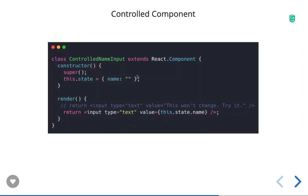Controlled components: the state of a component is controlled by React state. An input text field's value is controlled by state - you type something, an onChange event fires, you call setState with the new value. The value prop is driven by state. If you set value to a fixed string it won't change - only by updating state via onChange will the input reflect new values.